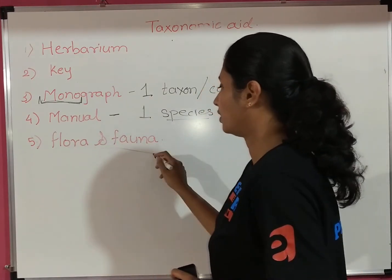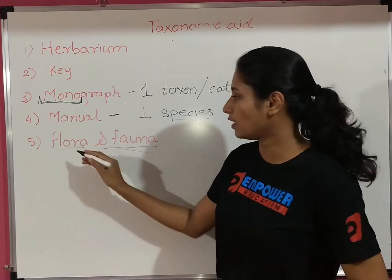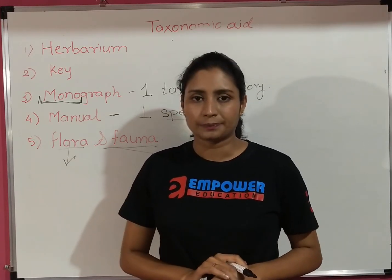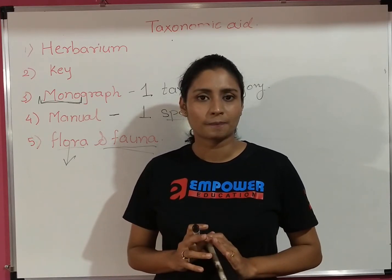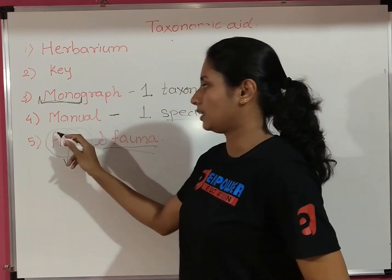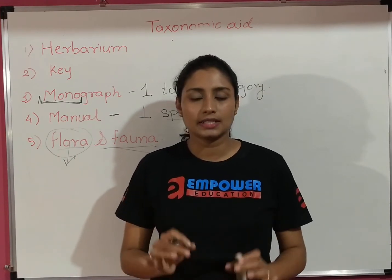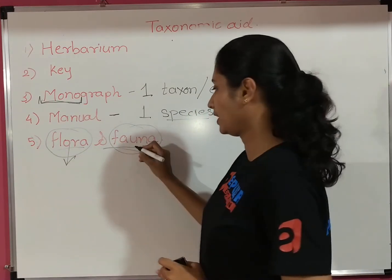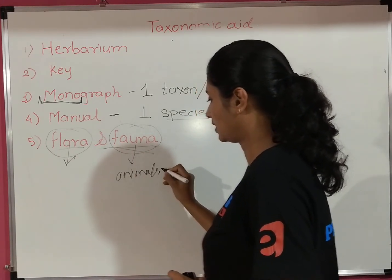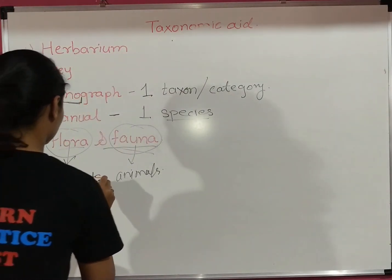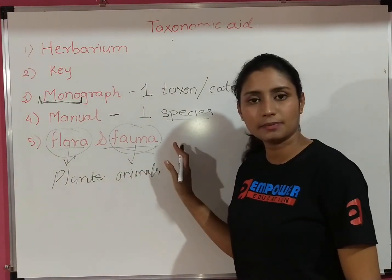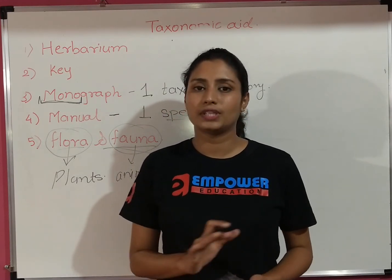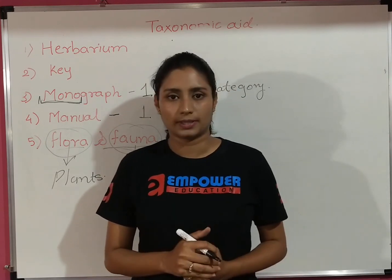Next are flora and fauna. Imagine a particular area — all the different types of plants present in that area is known as flora. Similarly, fauna refers to different animals present in a particular area. So we are done with the first chapter on living world. Thank you.